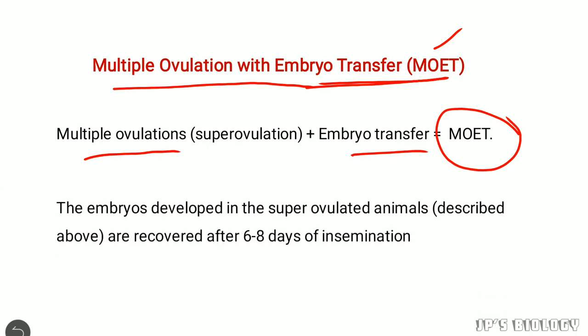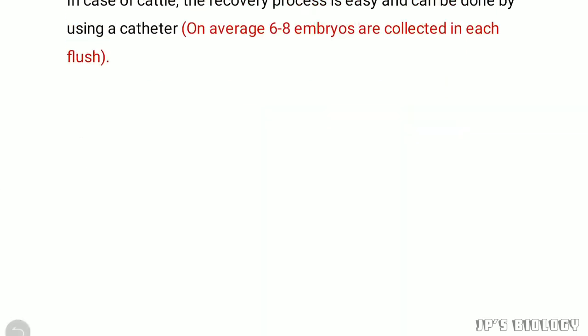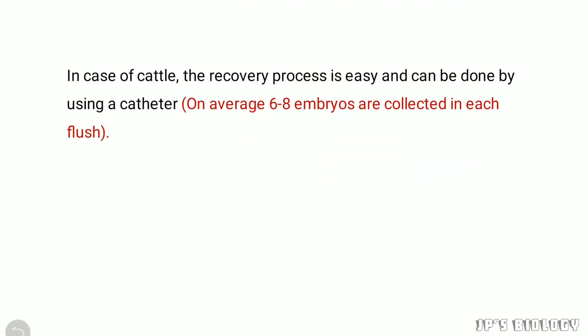These embryos developed in the superovulated animals are recovered after 6–8 days of insemination. In the case of cattle, the recovery process is easy and can be done by using a catheter. On average, 6–8 embryos are collected in each flush.